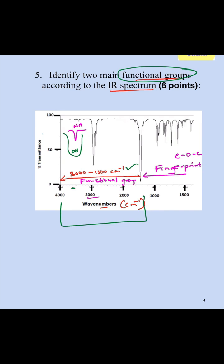And then around 3000 is CH. So this area, like what we have here, that is CH.